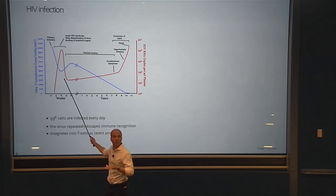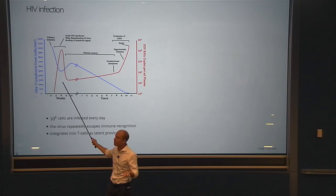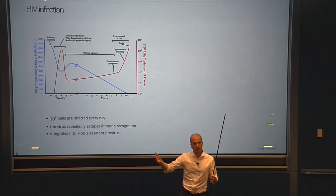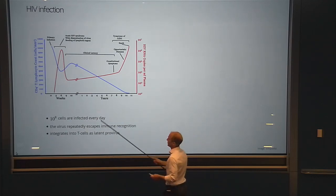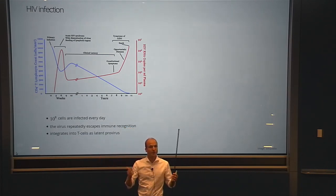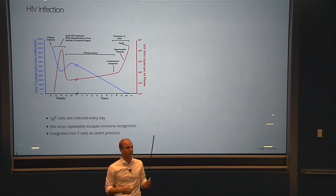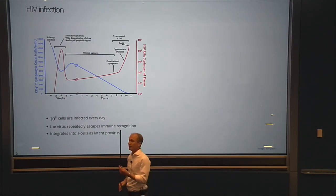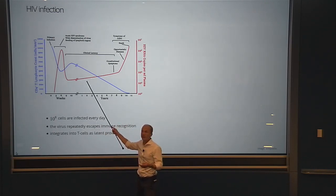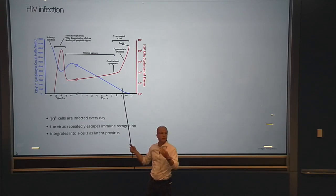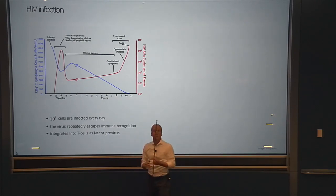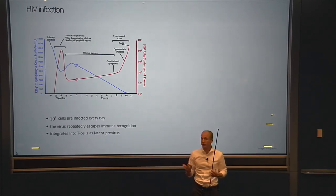The immune system doesn't manage to eradicate the virus population completely. The virus keeps replicating at a rather low level for many years if untreated, and during that period the person is asymptomatic and possibly doesn't even know their infection status — a big public health concern. The state of the immune system is shown by the blue curve: the number of CD4-positive cells per microliter of blood.